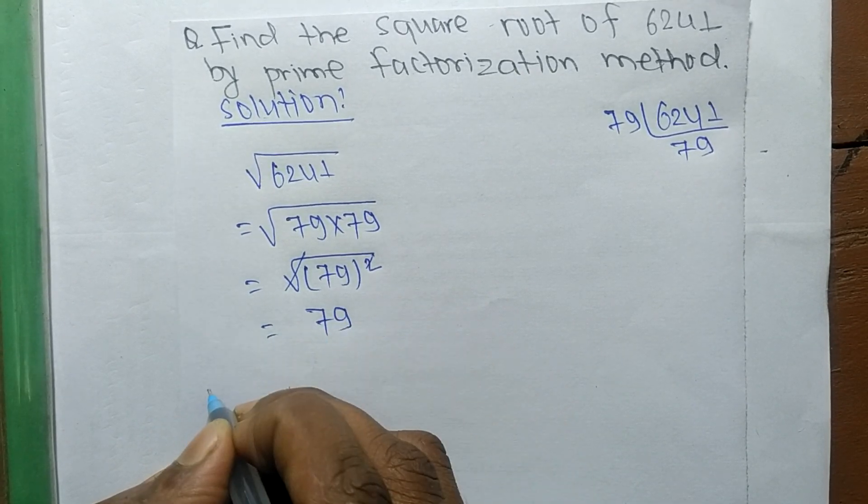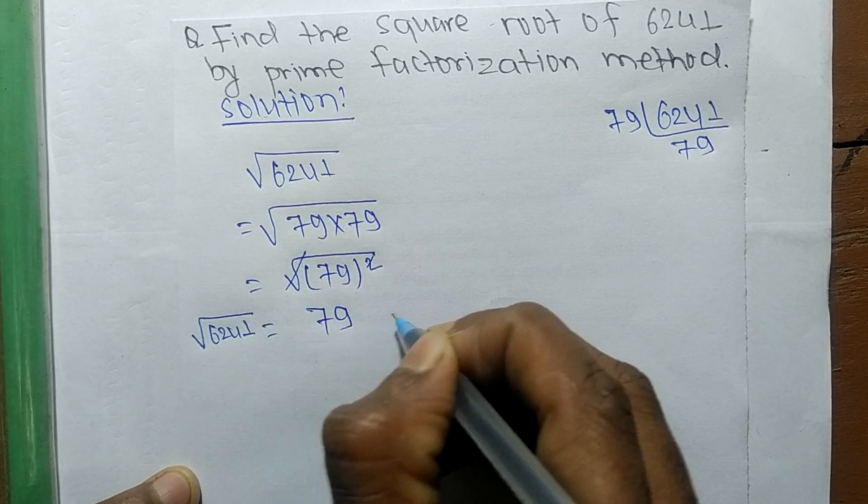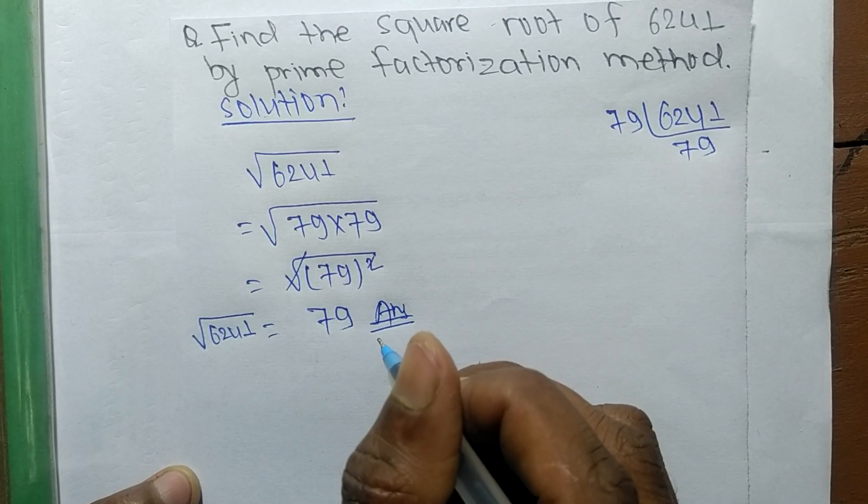The remaining number is 79, so the square root of 6241 is equal to 79. This much for today.